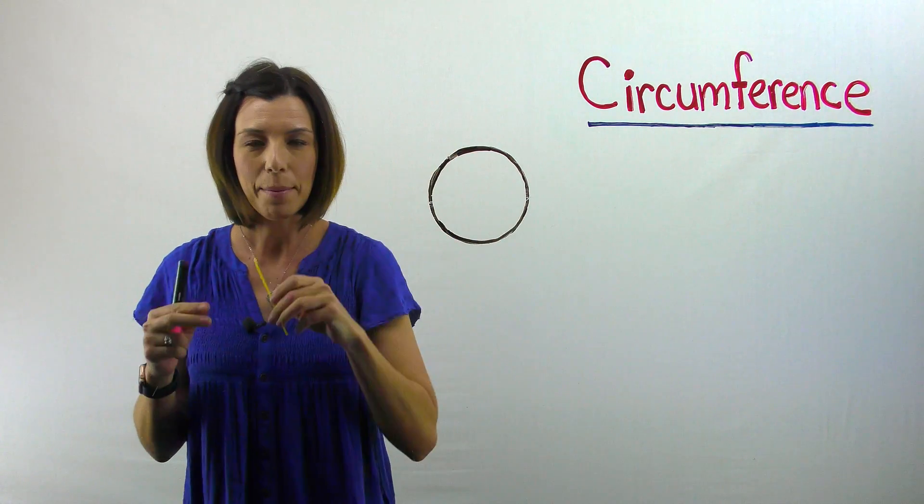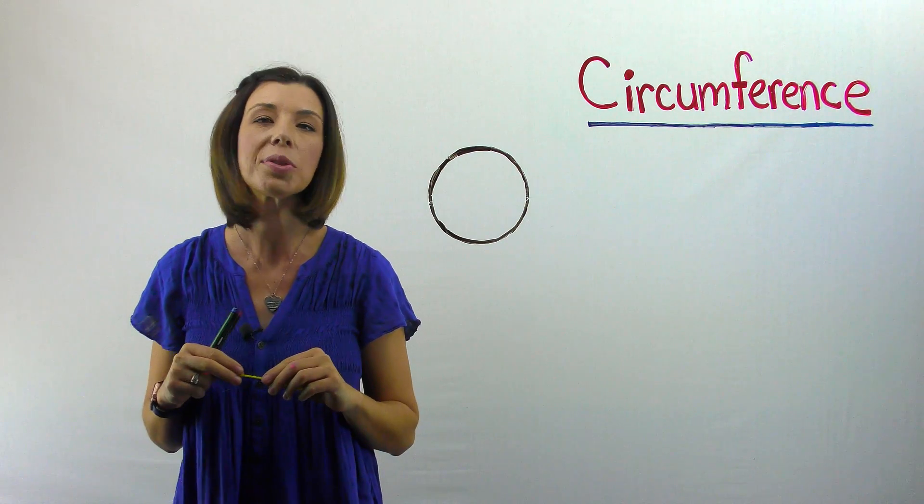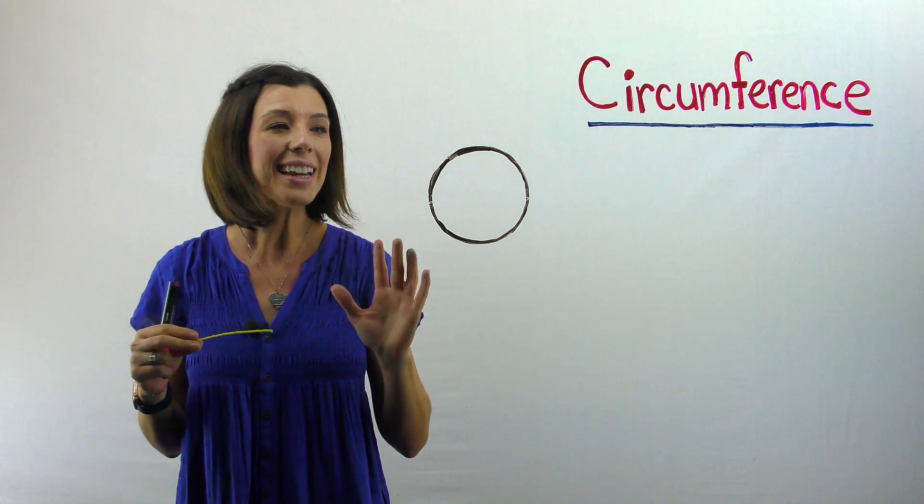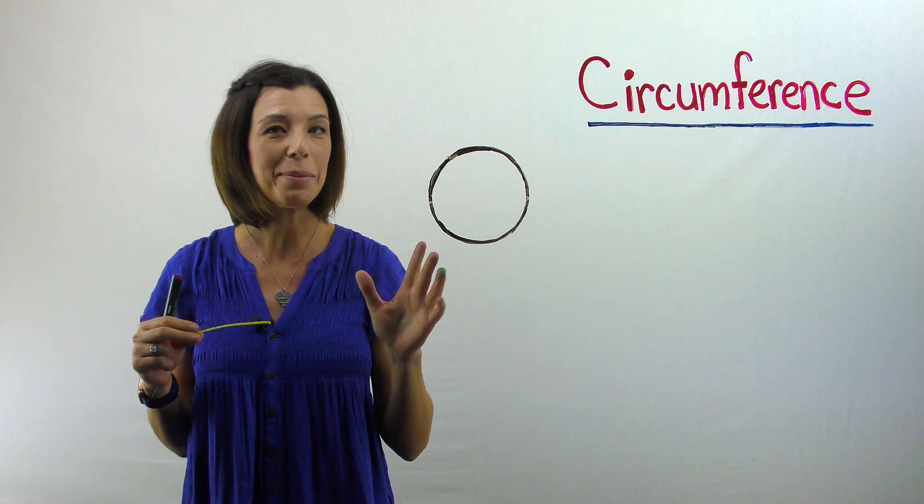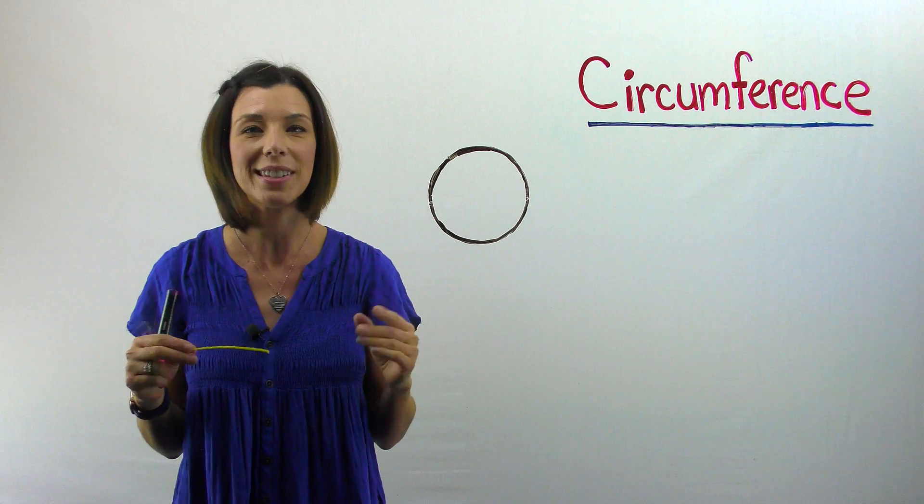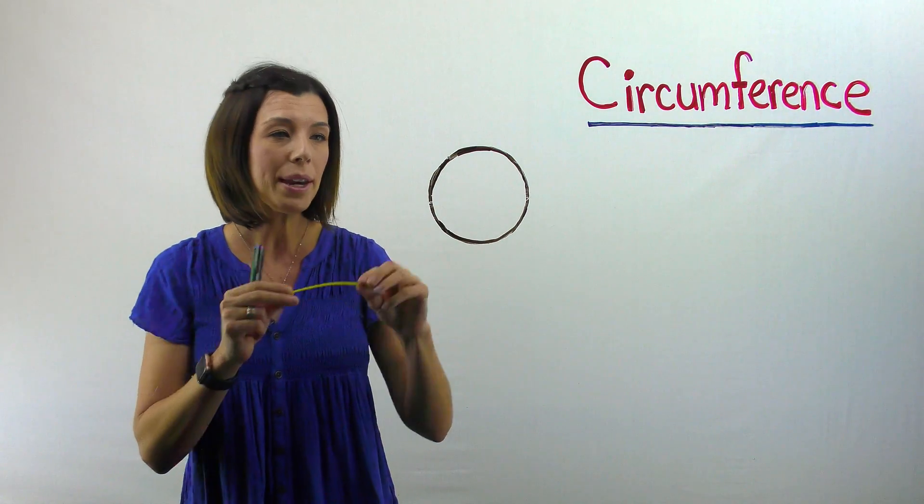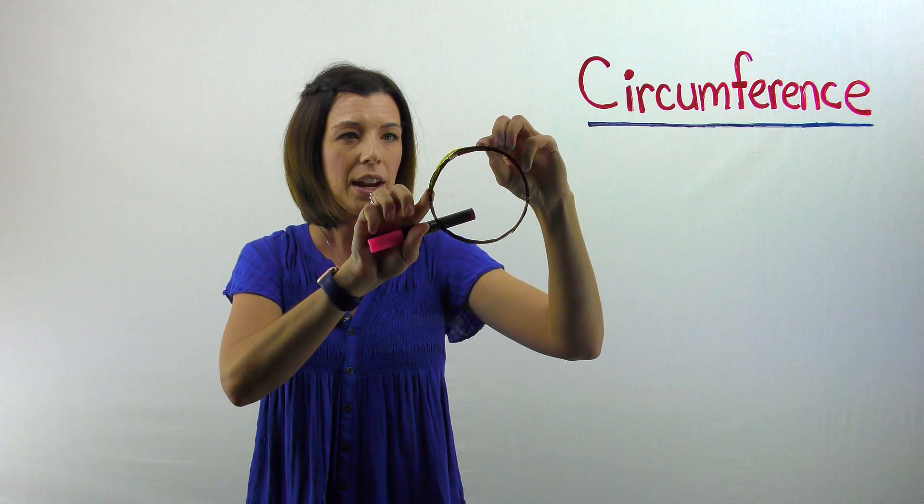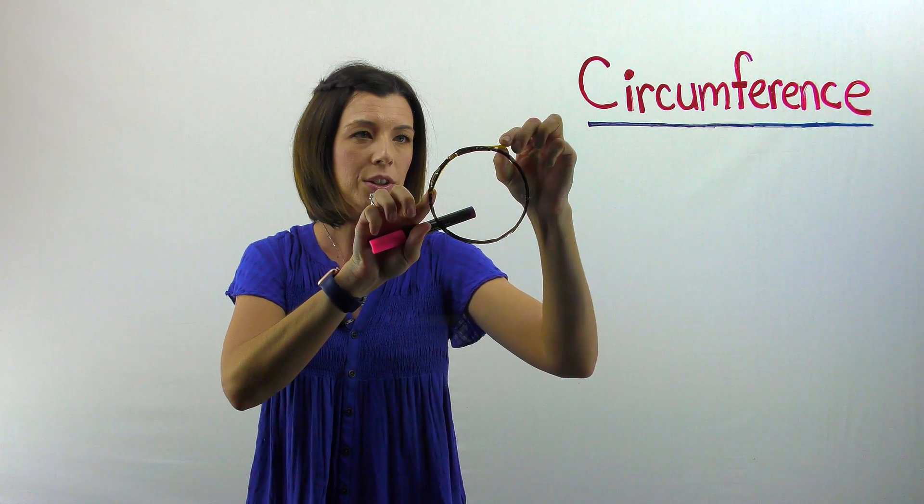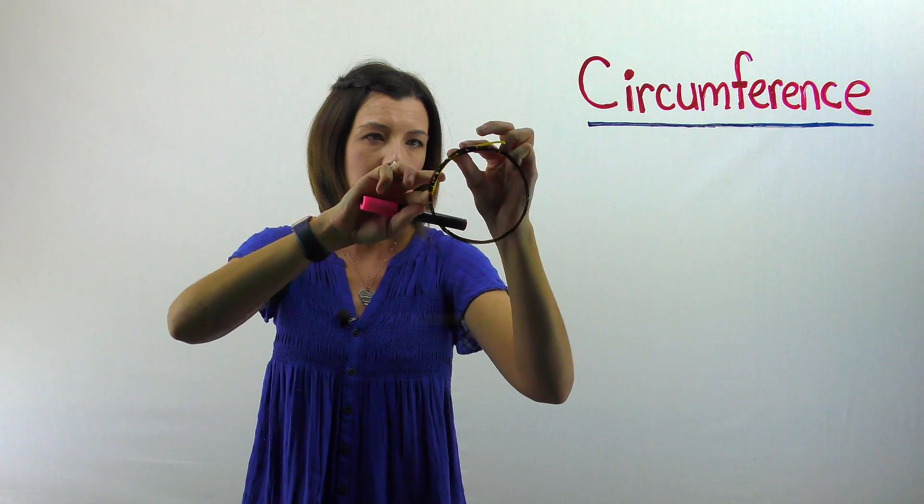Now that we've got our diameter, what we're going to do is we're going to see how many times it goes around the circle. Again, your circle is going to be a different size than mine, and that's perfectly okay. We're going to see if it's all the same. So pick any point on the circle, and let's start by wrapping the diameter around. Now you'll notice that you want to try and do it as perfectly as you can to the edge of the circle.